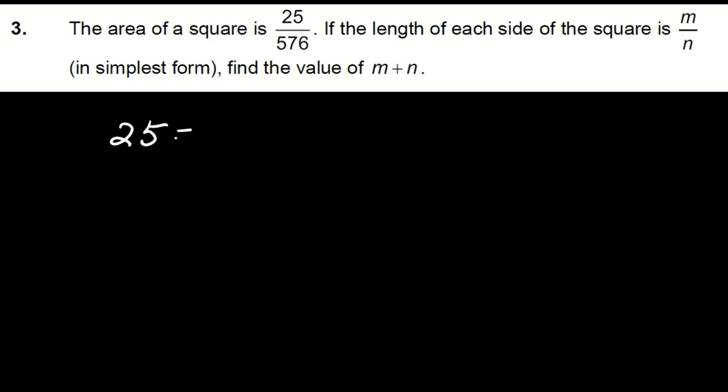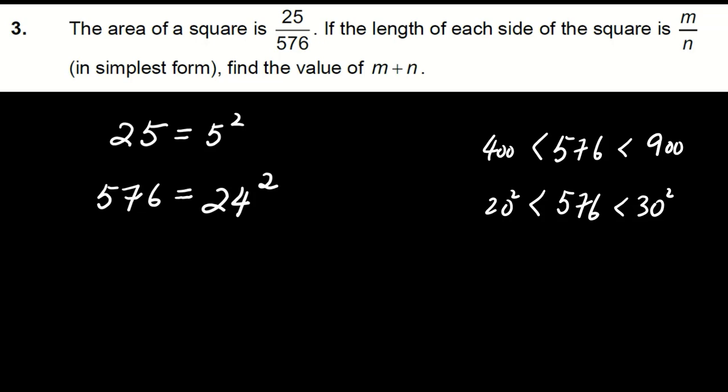Note that 25 equals 5 square and 576 equals 24 square. It might not be common knowledge that 24 square is 576. Hence, here is a helpful hint. Since 576 is between 400 and 900, it falls between 20 square and 30 square. Given that the last digit of 576 is 6, if x square equals 576, the last digit of x must be either 4 or 6, making x either 24 or 26. So we just need to check 24 square and 26 square.